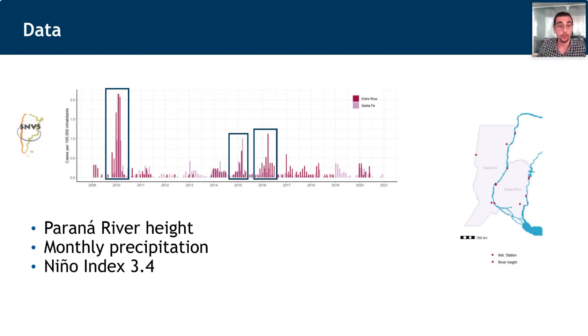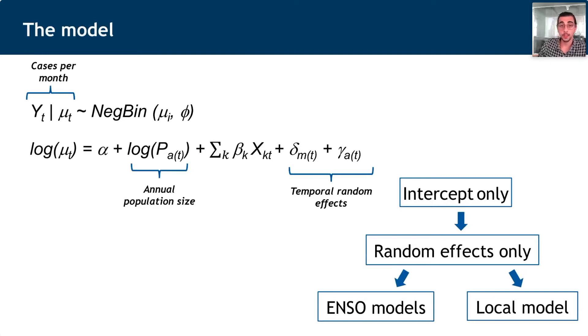What we did is basically assume that case counts had a negative binomial distribution. We developed a model in which the log of the risk follows this linear predictor, defined by the annual population size, which we included as an offset, making the model able to estimate the risk, a set of combinations of climate hydrometeorological predictors. We not only used the amount of precipitation but also included lags from 0 to 5 because we didn't assume that the impact of a specific amount of precipitation would rely only on that particular month but could have a delayed impact up to five months.